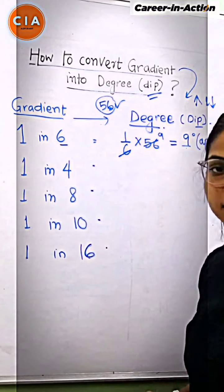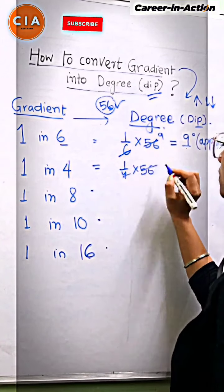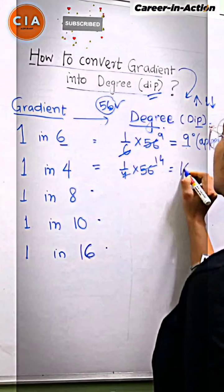1 in 4 is this way. How do you do it? 56 divided by 4 equals 14. So, you will get 14 degrees.